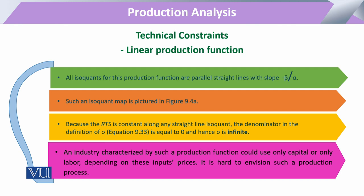When various isoquants of a production function are parallel to each other, the slope of each isoquant is equal to minus beta divided by alpha. Since beta is related to the marginal productivity of capital expressed on the y-axis, the slope is expressed as minus beta by alpha. Such an isoquant map is mostly expressed in the form of straight lines.